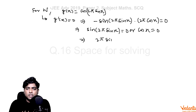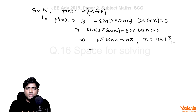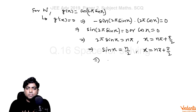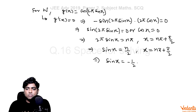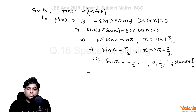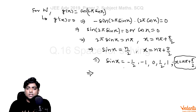From sin(2π sin x) = 0, we get 2π sin x = nπ, so sin x = n/2. From cos x = 0, we get x = nπ + π/2. Then sin x = n/2 means sin x can be -1, -1/2, 0, 1/2, or 1. And x = nπ + π/2 gives values like π/2, 3π/2, etc., which are already covered when sin x = ±1.